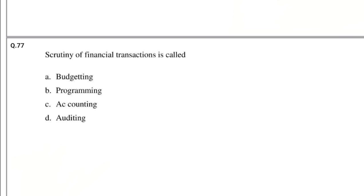Question number 77: Scrutiny of financial transactions is called — options: Budgeting, Programming, Accounting, Auditing. The answer is Auditing.